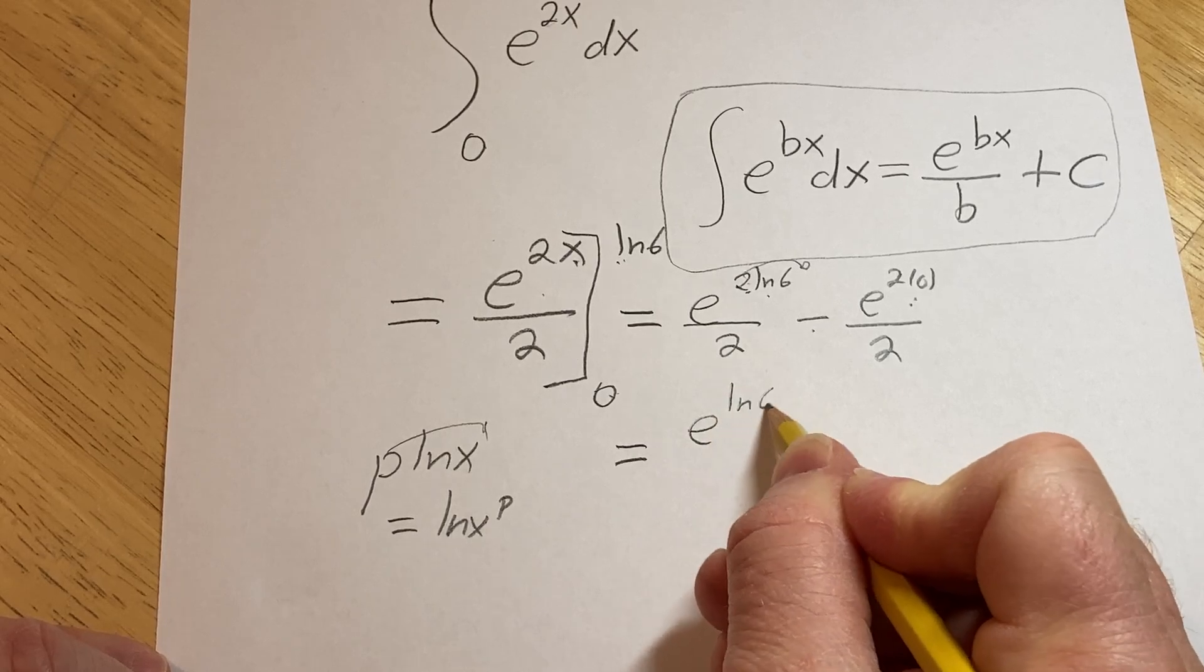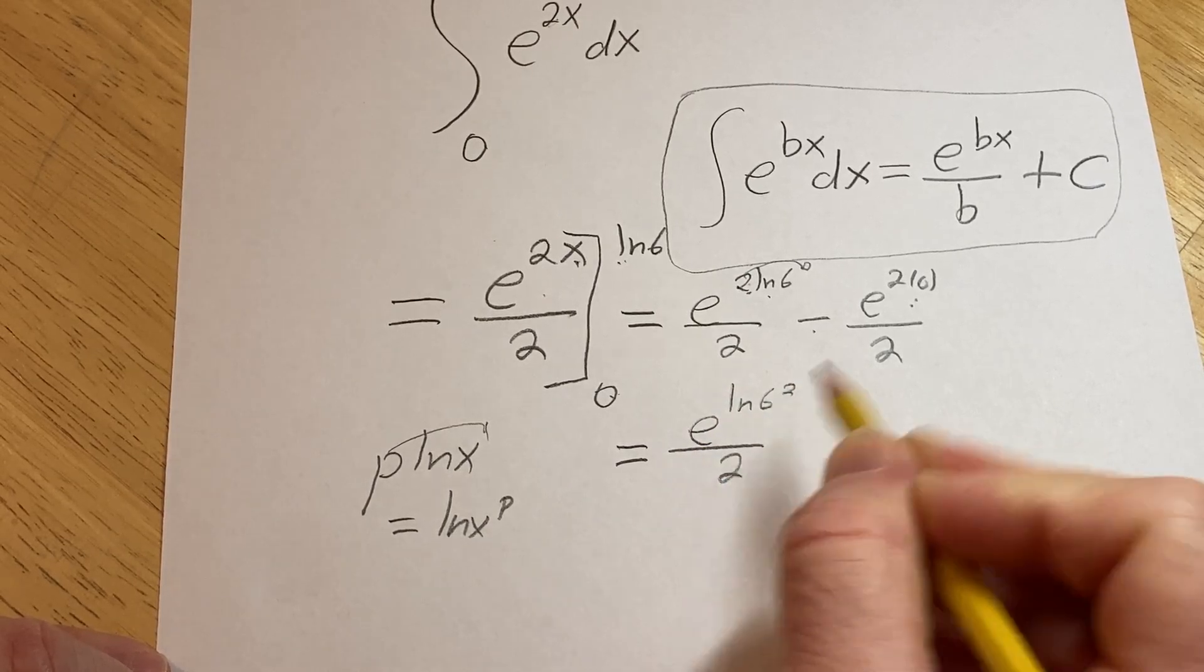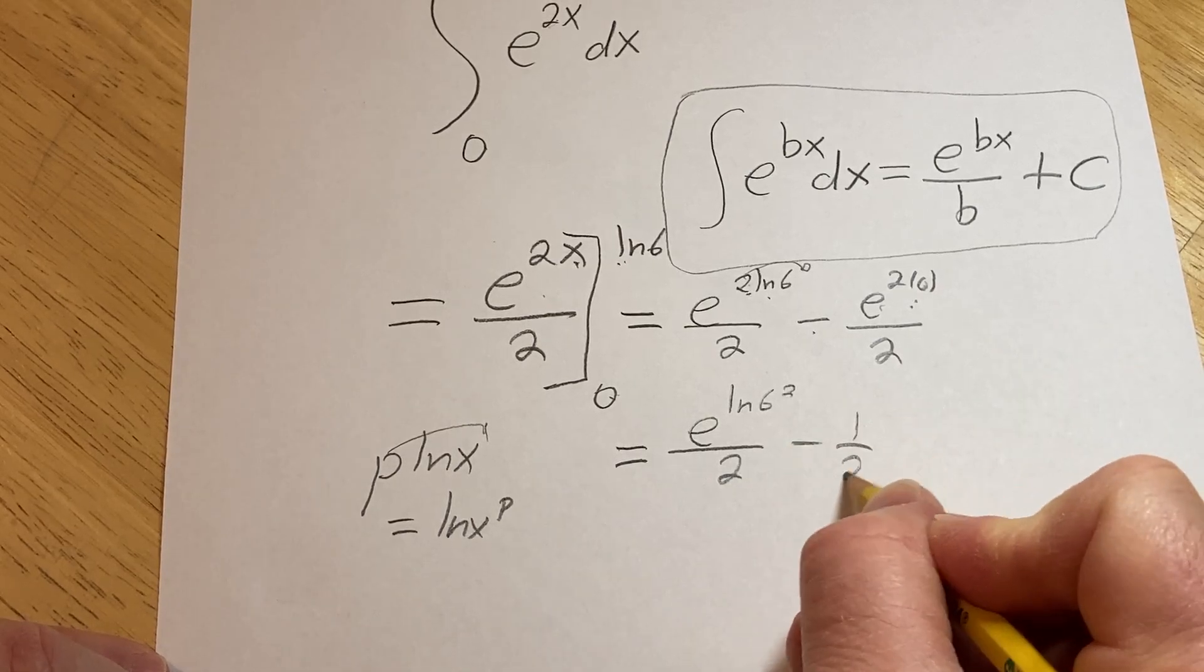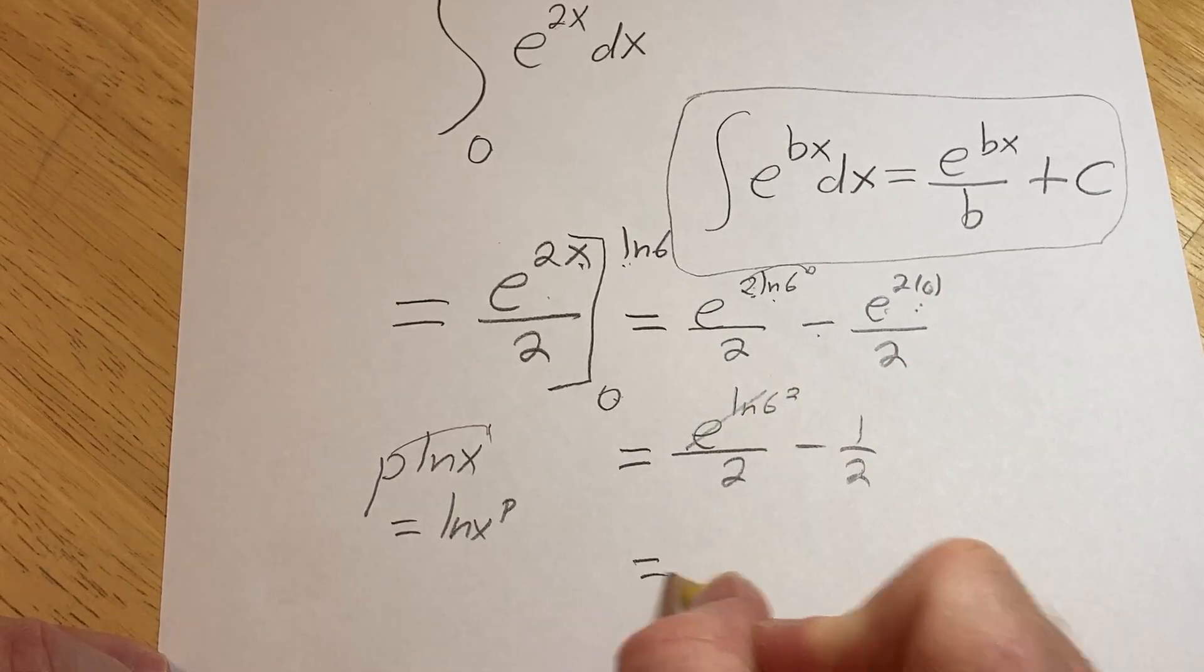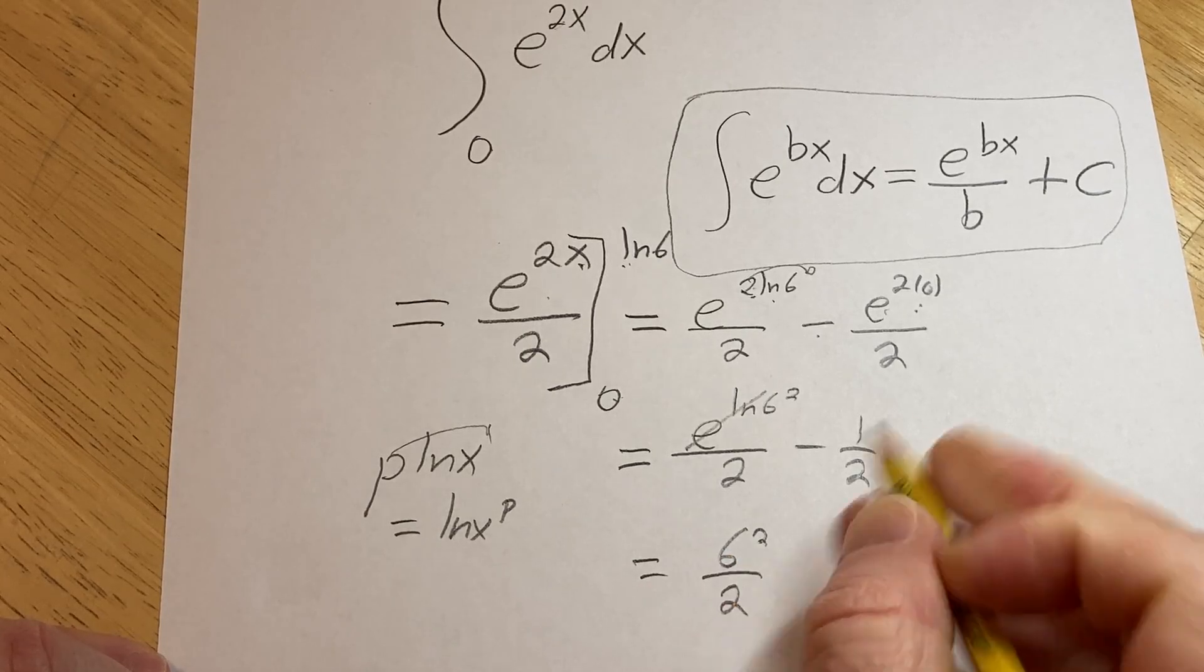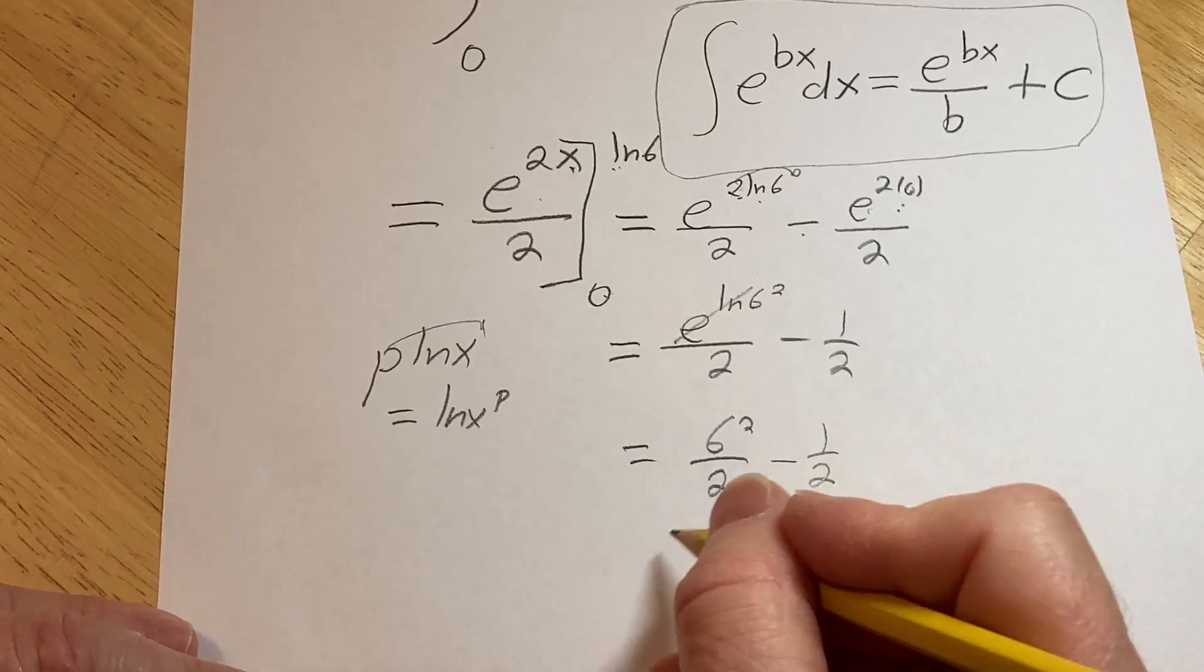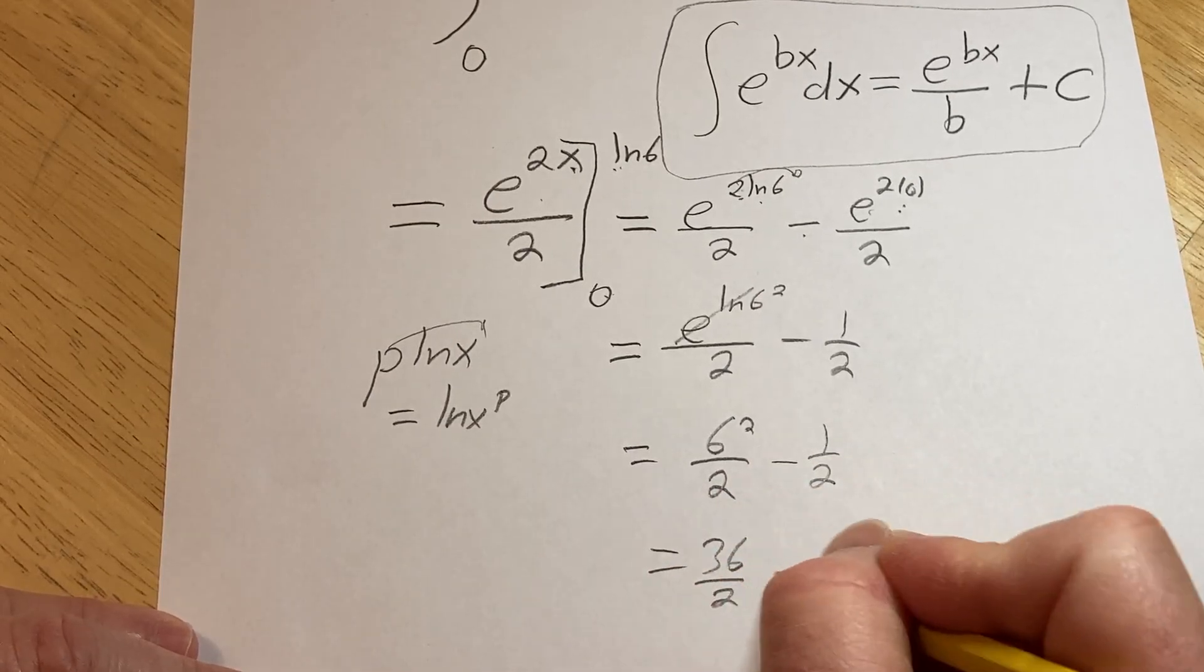It'll be e to the ln 6 squared over 2. Here we get e to the 0, which is 1, so we just get 1 half. These cancel. So we get 6 squared over 2 minus 1 half. 6 squared is 36 minus 1 half.